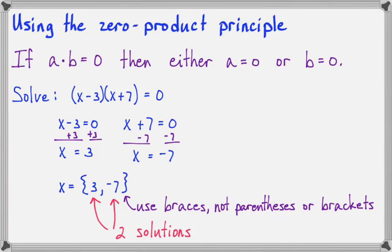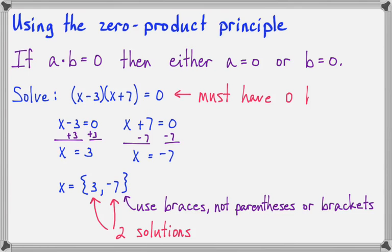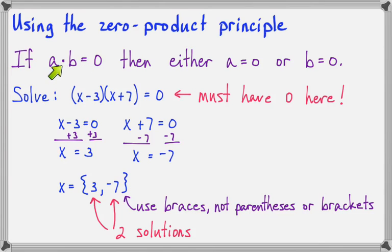Notice that our equation had two solutions — there will be a solution for each factor in the problem. Also, we absolutely must have zero on the right side. Any other number will not work, because no other number has this multiplication principle where if two numbers are multiplied together and equal zero, we know one of them is zero. No other number can do that.